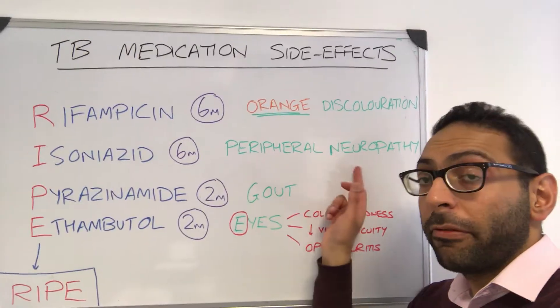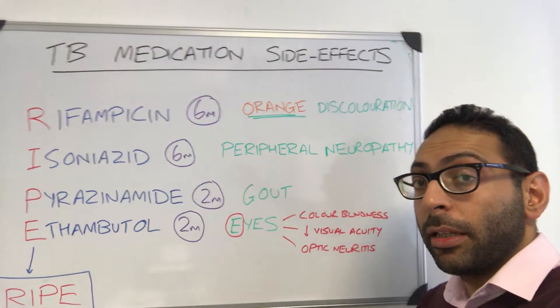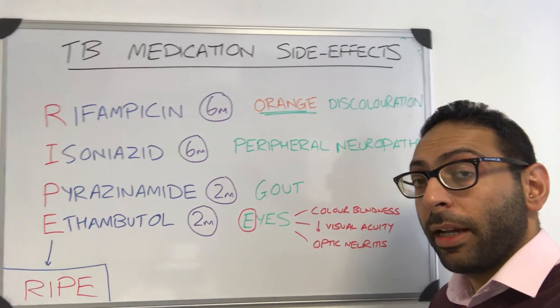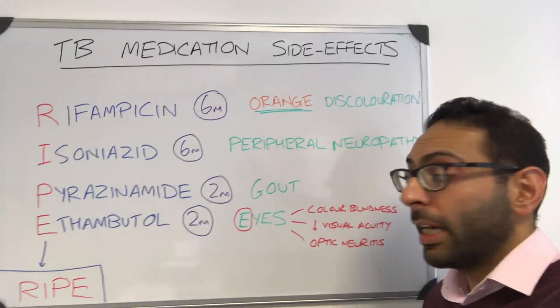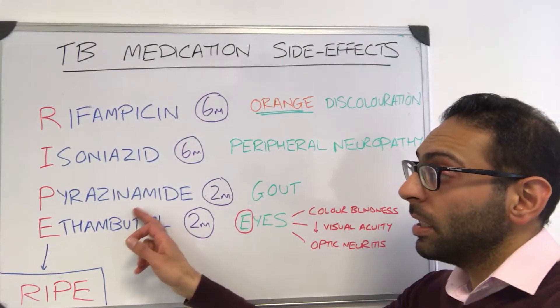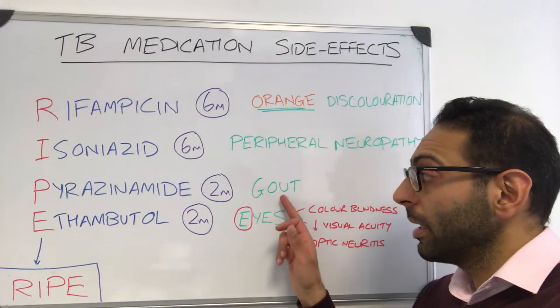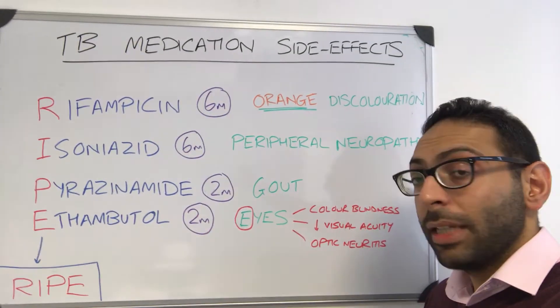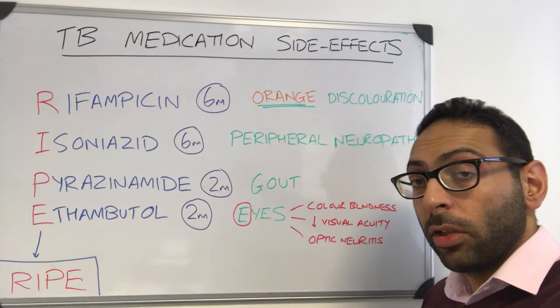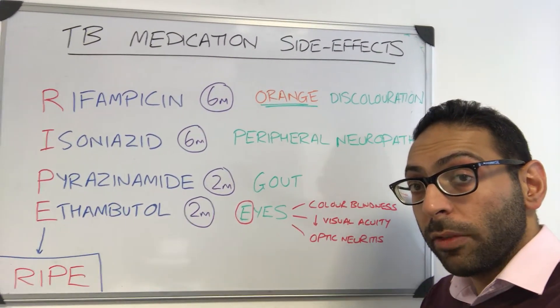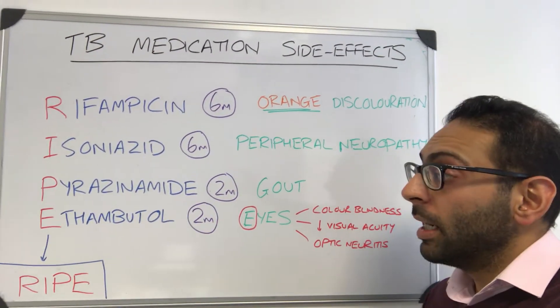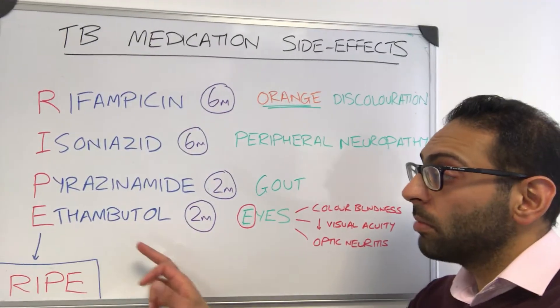For Isoniazid, think about peripheral neuropathy — a very common side effect with this medication. When it comes to Pyrazinamide, there are lots of different side effects, but remember gout: you don't use it in acute gout, and it can cause arthralgia.